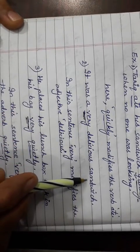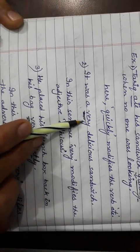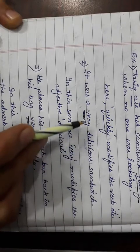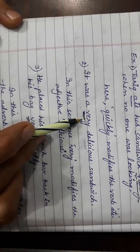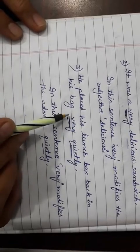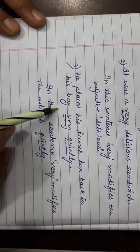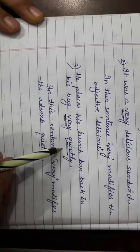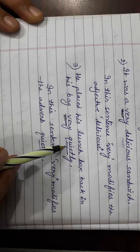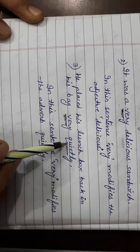In second sentence, it was a very delicious sandwich. In this sentence, very modifies the adjective delicious. Very modified the adjective, so very is an adverb here. In third example, he placed his lunchbox back in his bag very quietly. In this sentence, very modifies the adverb quietly. So here, quietly is an adverb.